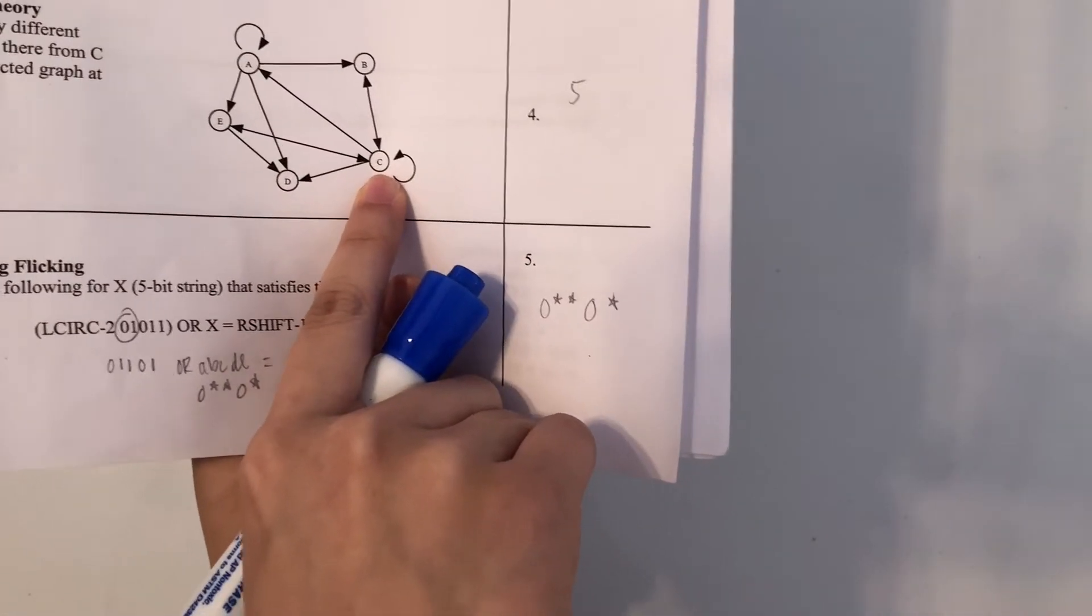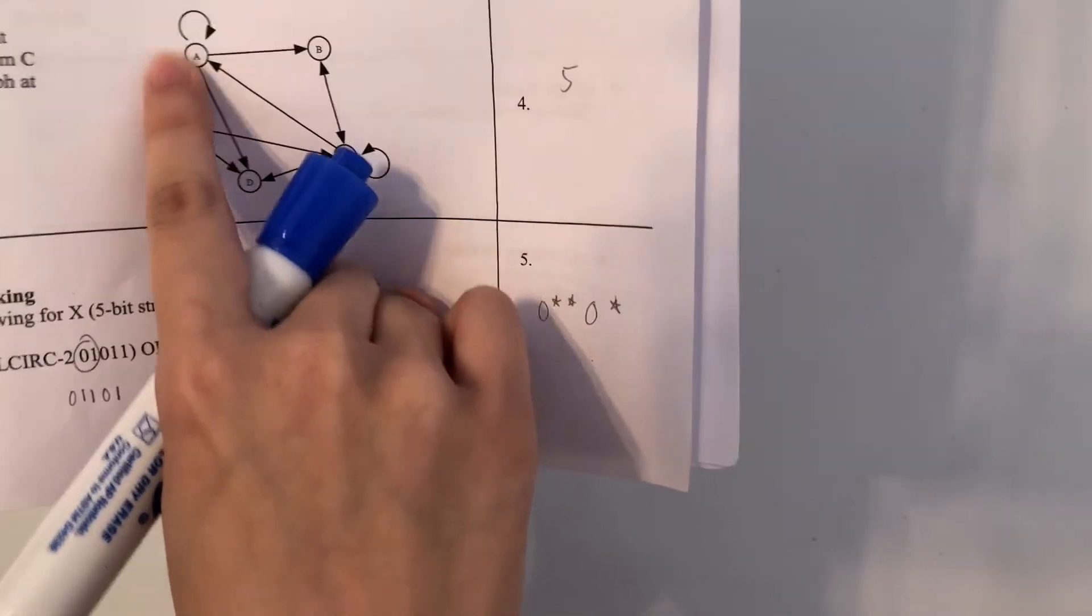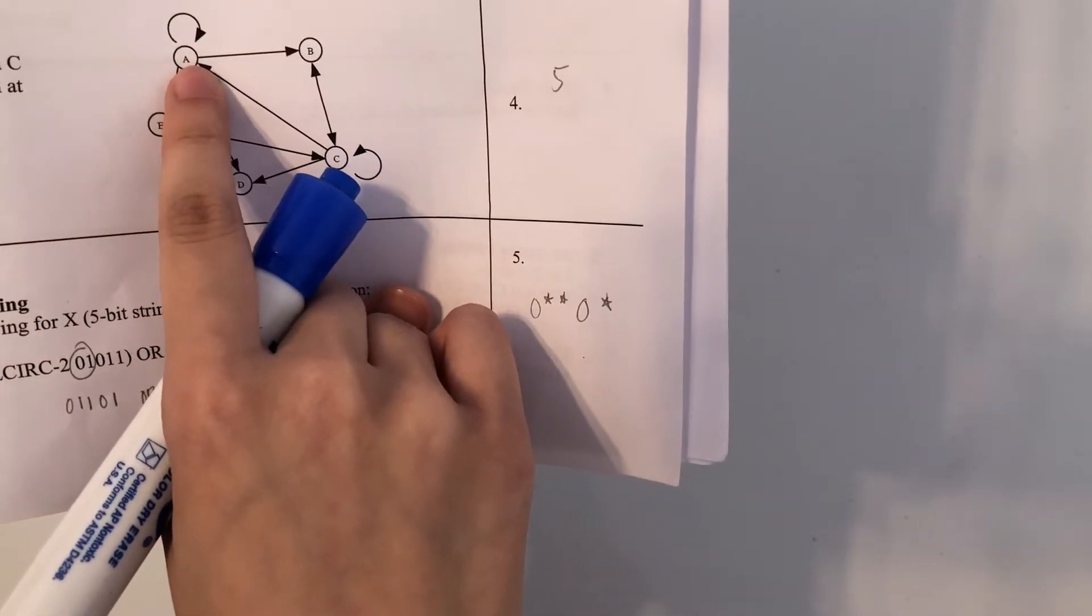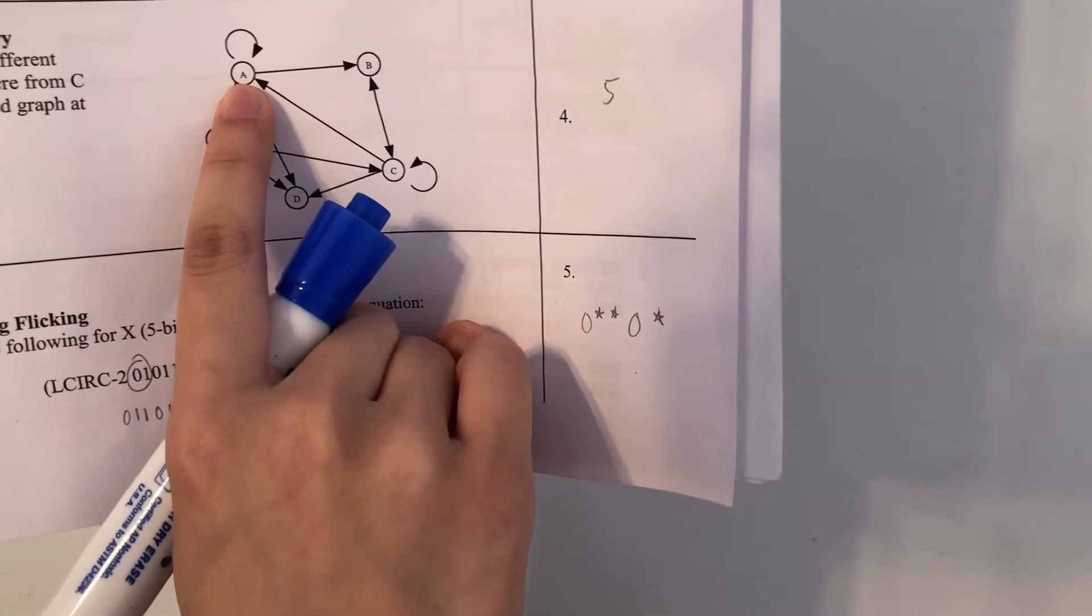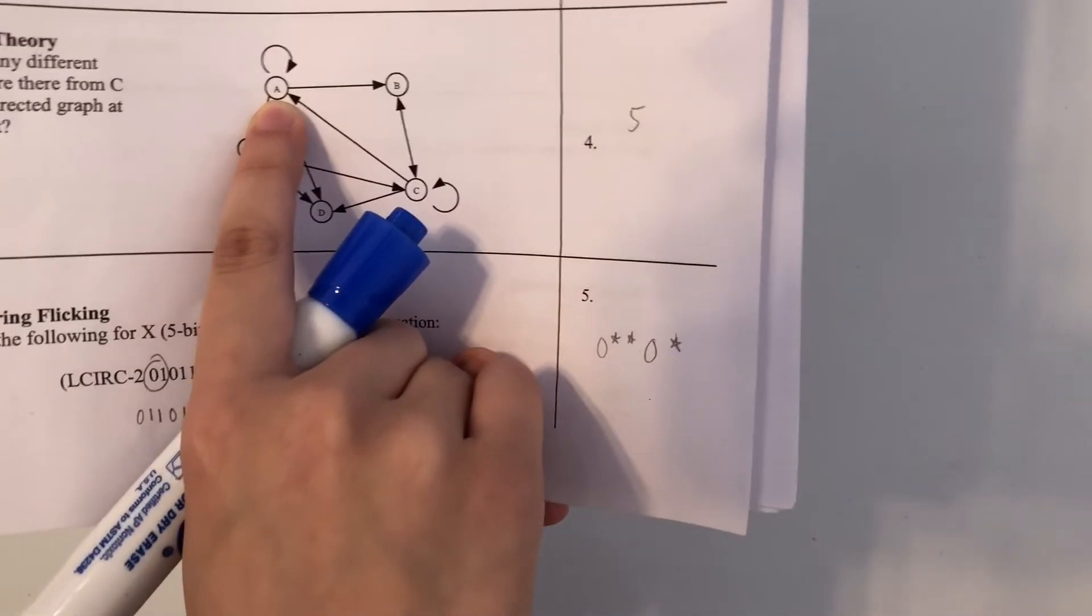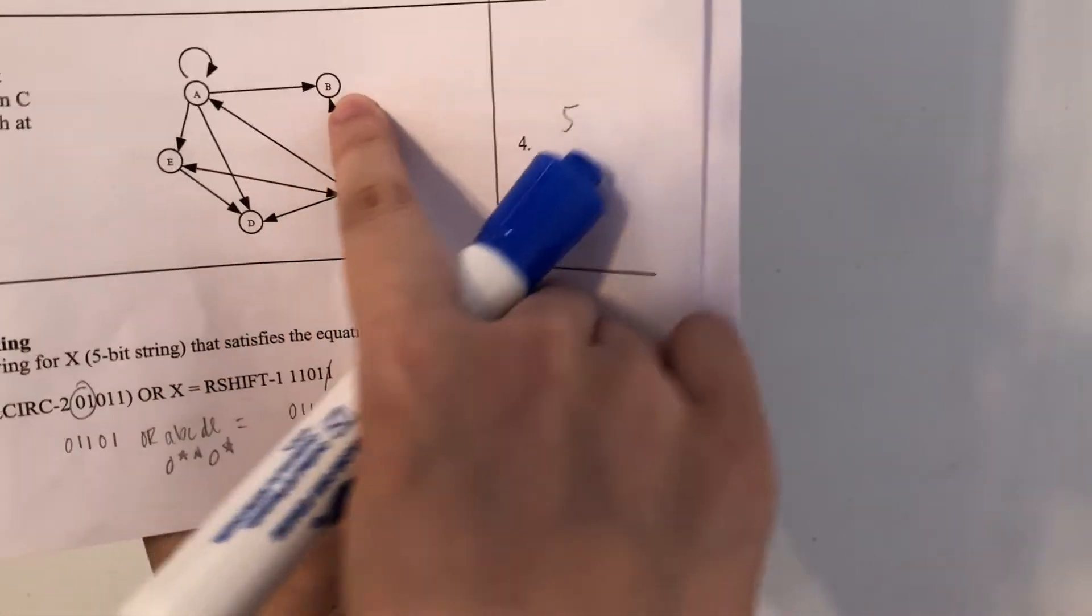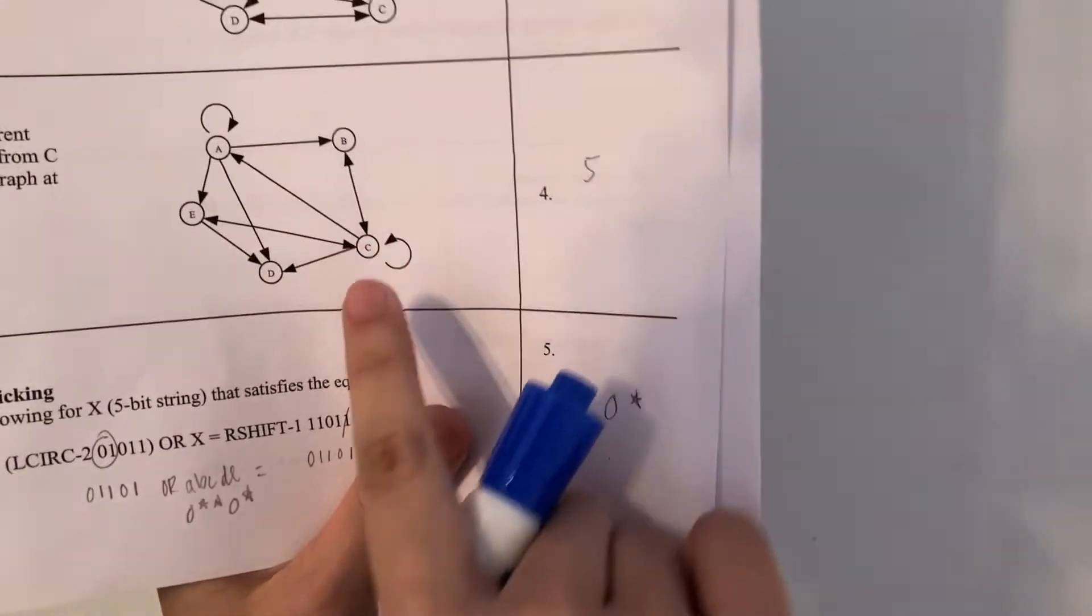Let's try going from C to A. So from A, we can go back to A, but that actually isn't counted as one of the cycles because you can only go to each vertex once. So we can't take this path. We can go to B, however, and go back to C. So that would be another one, C-A-B-C.